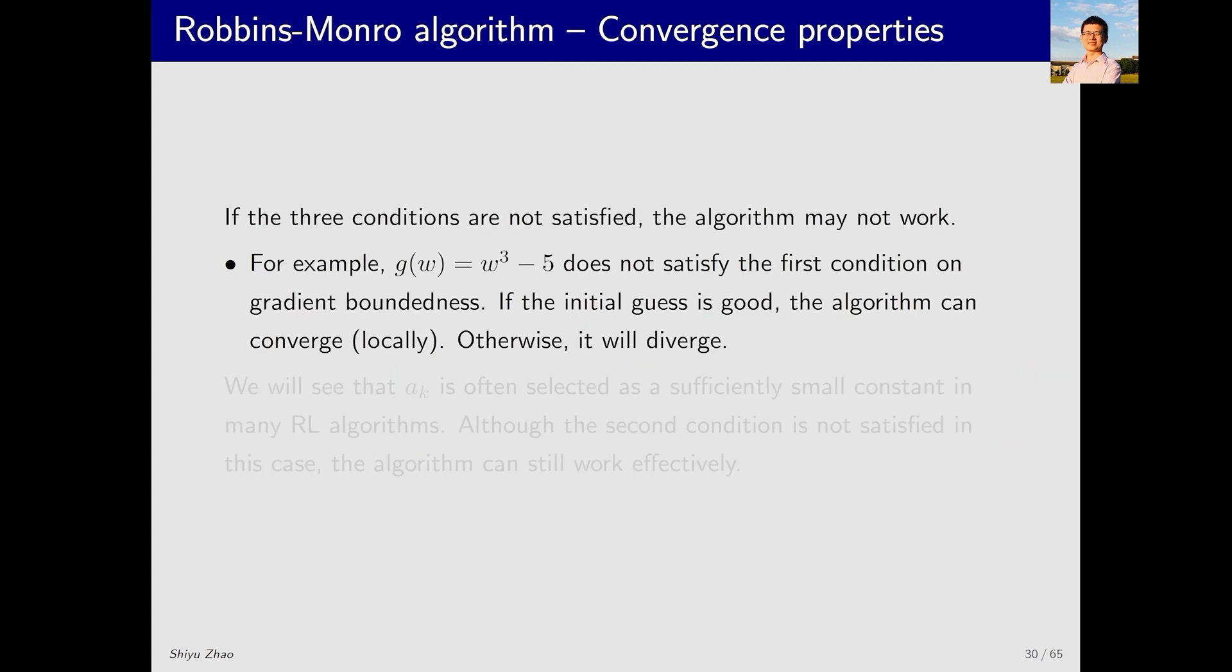If any of the three conditions in the RM algorithm are not met, the algorithm may fail to work. Let's consider an example where g(w) equals w cubed minus five. This example does not satisfy the condition that the gradient of g(w) should be bounded.